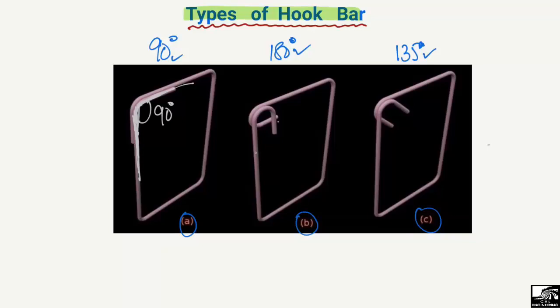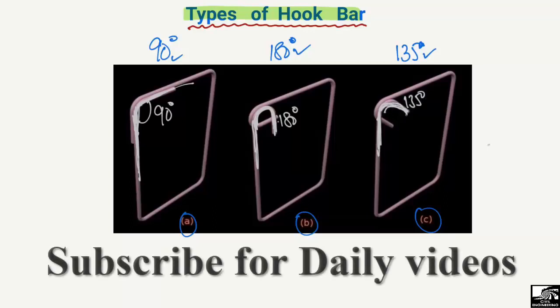Similarly, looking at the 180 degree hook, this part has been bent at an angle of 180 degrees — the angle between the bend is 180 degrees, hence we call it the 180 degree hook. In the case of the 135 degree hook, the angle between the vertical and the bent part is 135 degrees, which is why it is known as the 135 degree hook.